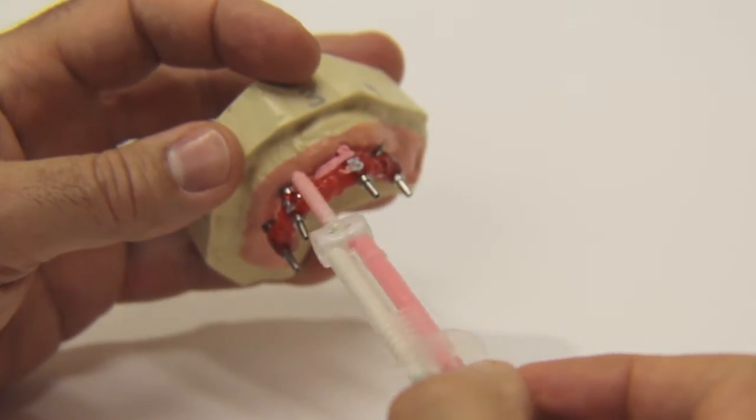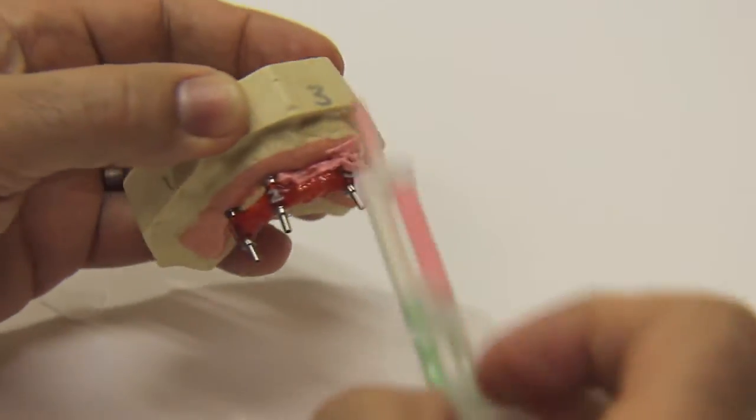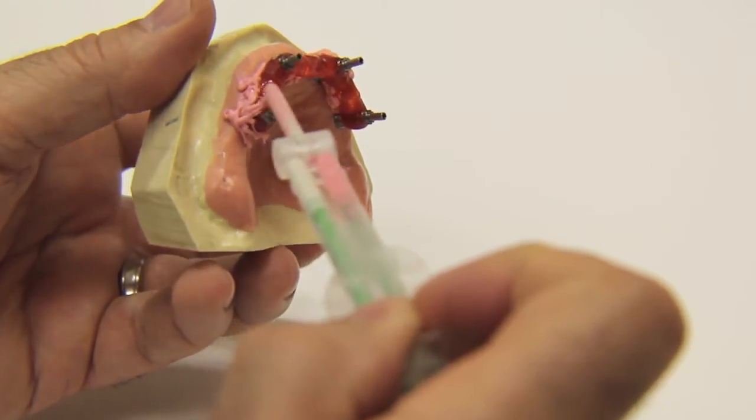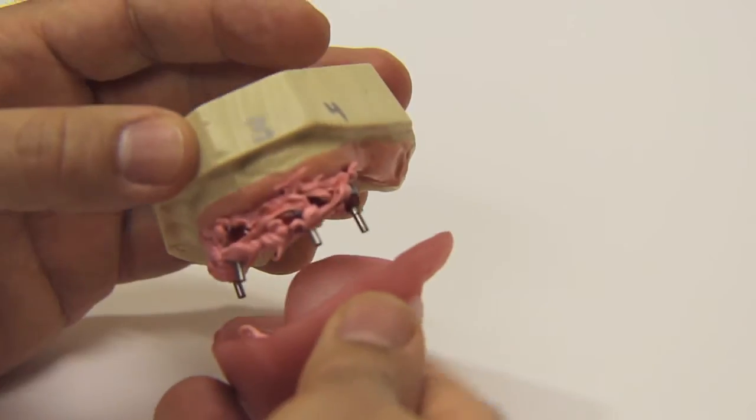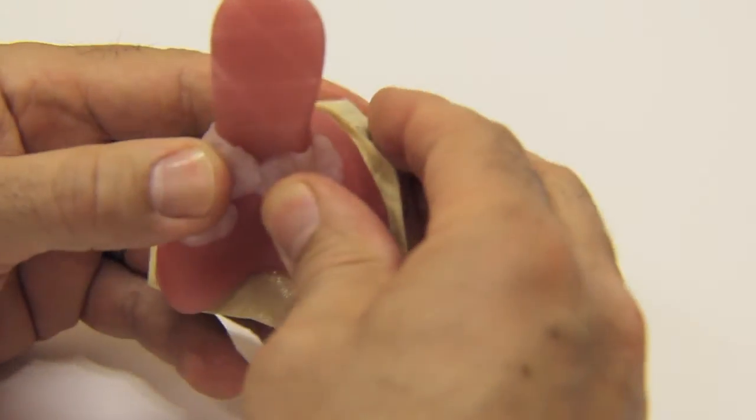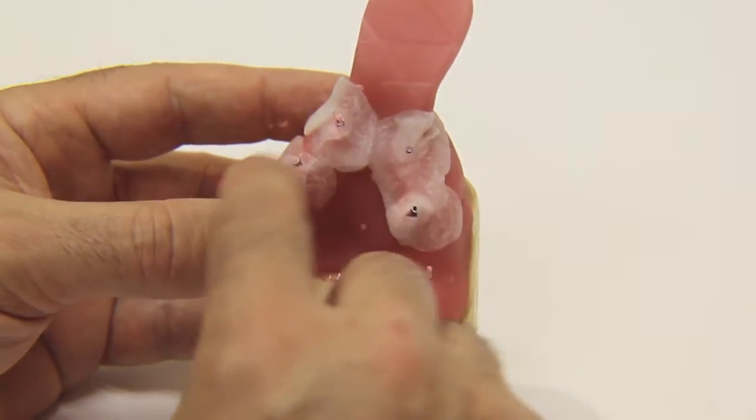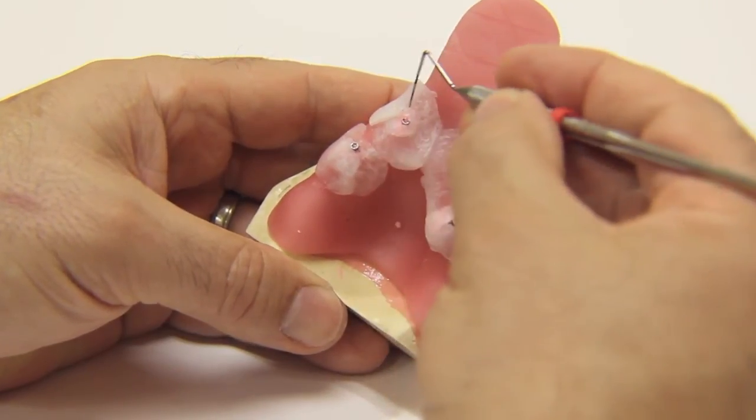Apply light-bodied impression material under and around the verification jig, during which time your assistant should load the custom tray with heavy-body impression material. Firmly seat the tray over the verification jig. As the tray is seated over the jig, the guide pins should poke through the wax, protecting the screw heads from the impression material.